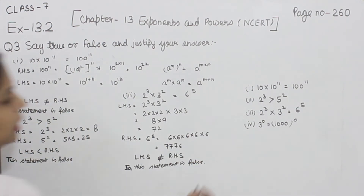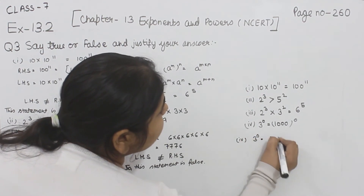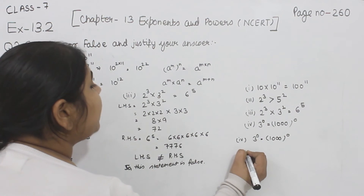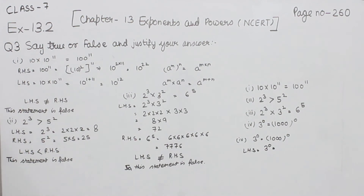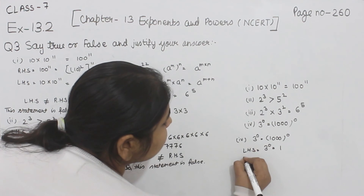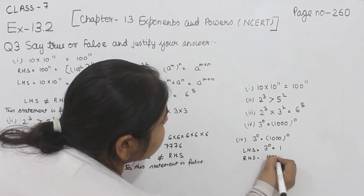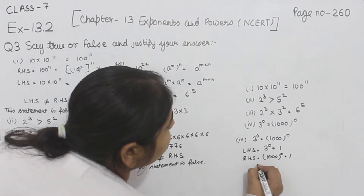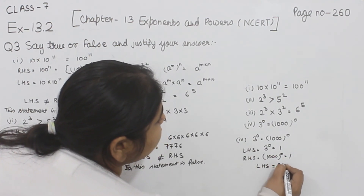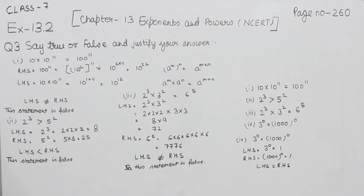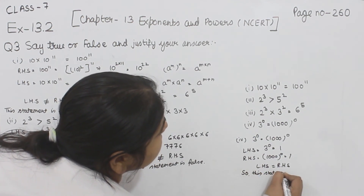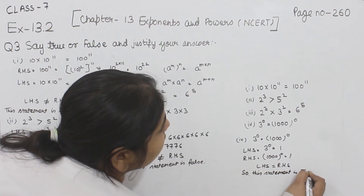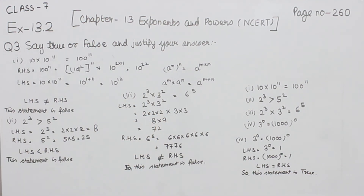Now for part 4: we have 3 to the power 0 is equal to 1000 to the power 0. For the left hand side, 3 to the power 0 — any number raised to the power 0 equals 1. For the right hand side, 1000 to the power 0 is also 1. So left hand side equals right hand side, and this statement is true. We have completed part 4 and question number 3. In the next video we will start with question number 4.